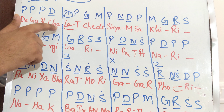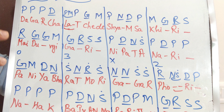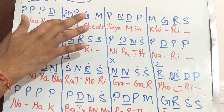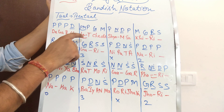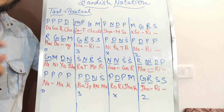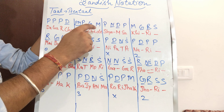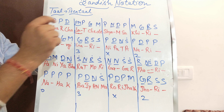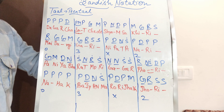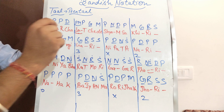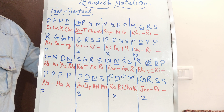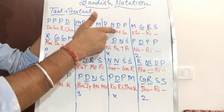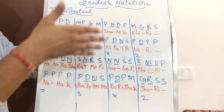So I use Dagar — D-A-G-A-R. Chalat — C-H-A-L-A-T, where 'Ch' is pronounced with C-H-A in English. Chede — C-H-E-D-E. Shyaam is written like S-H-Y-A-M. That is the spelling of Shyaam, and according to the Bandish it is broken down as Shi-aam.